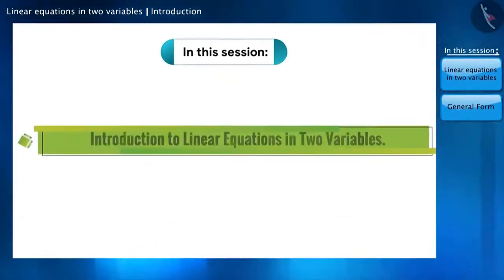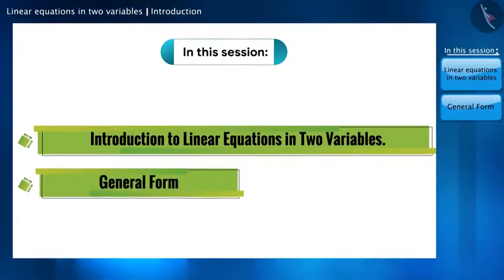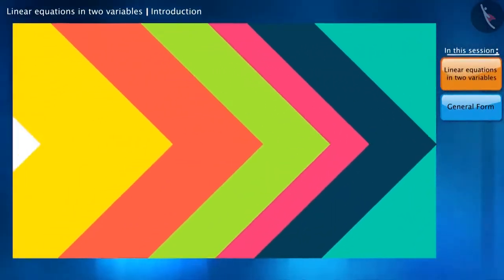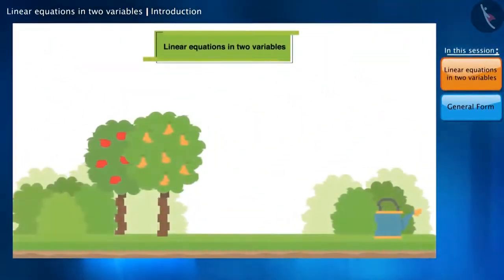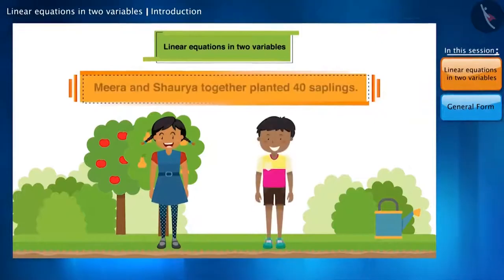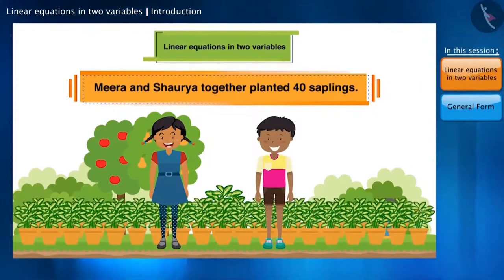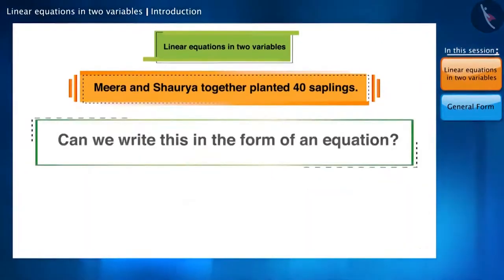Today, we will move one step further and discuss linear equations in two variables and their general form. Let's try to understand this with an example. Meera and Shouria together planted 40 saplings. Can they write this in the form of an equation? Yes, let's see how.